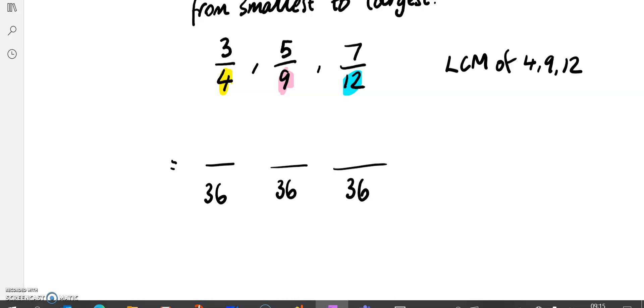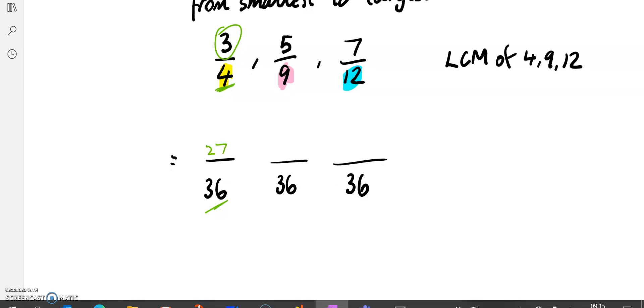So in order to figure out the new numerator, because it's not going to become 3 thirty-sixths or 5 thirty-sixths or 7 thirty-sixths, we need to make the equivalent fraction. We need to think about how did we get from 4 to 36? We times by 9. So we're going to need to do 3 times 9. 3 times 9 is 27. 3 quarters is the same as 27 thirty-sixths. Let's have a look at 5 ninths. How did we get from 9 to 36? Well, 9 times 4 is 36. So we're going to do this times 4. 5 times 4 is 20. And then this one here. How did we get from 12 to 36? Well, 12 times 3 is 36. So I'm going to times this by 3. This times 3 is 21 over 36.